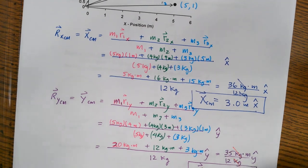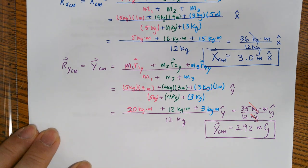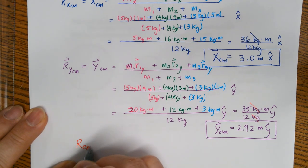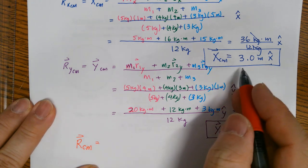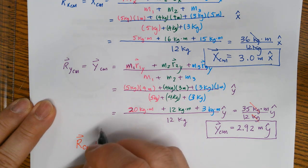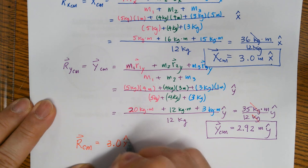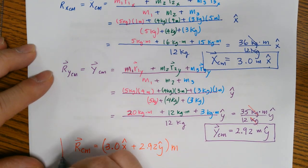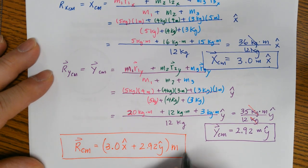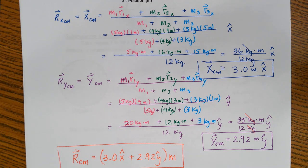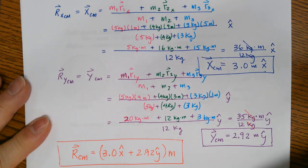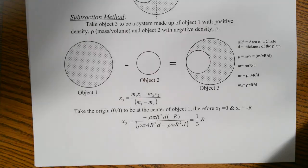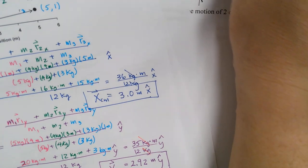So Y_CM comes out to 35 divided by 12, which is 2.92 meters y-hat. Therefore, R_CM equals X_CM plus Y_CM, which is 3.0 x-hat plus 2.92 y-hat meters as my R_CM. That's not that bad — it wasn't hard.